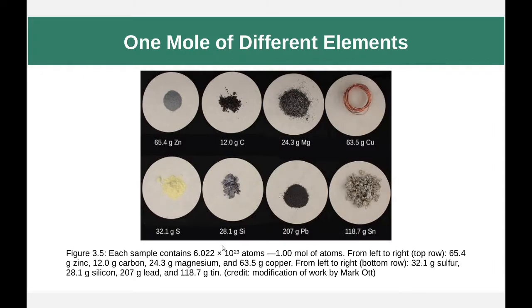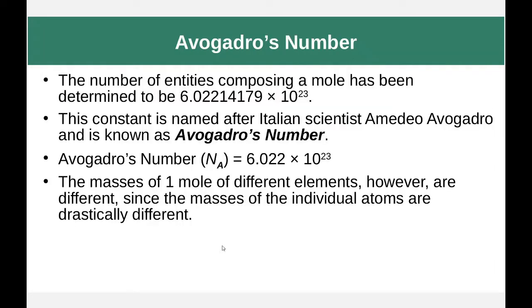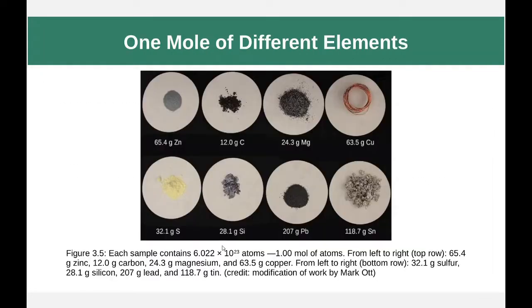Why is this useful? Let's take a look at moles of different things. Each one of these samples contains a mole of atoms, but each one weighs a different amount — because each individual atom weighs a different amount. But we can figure out how many atoms are in each sample simply by weighing them, because we can find the molar weight.